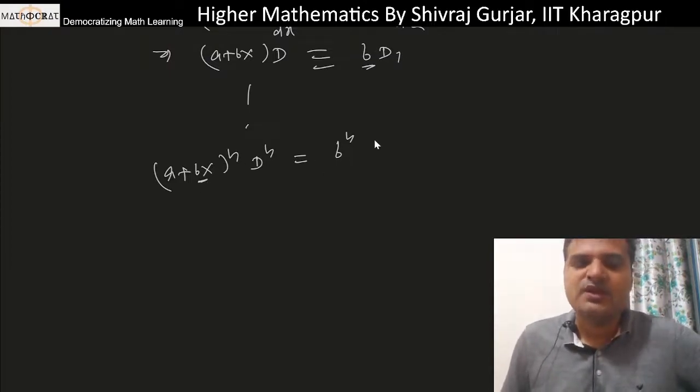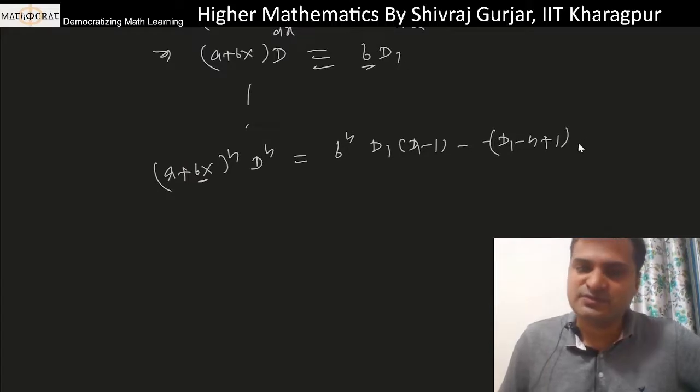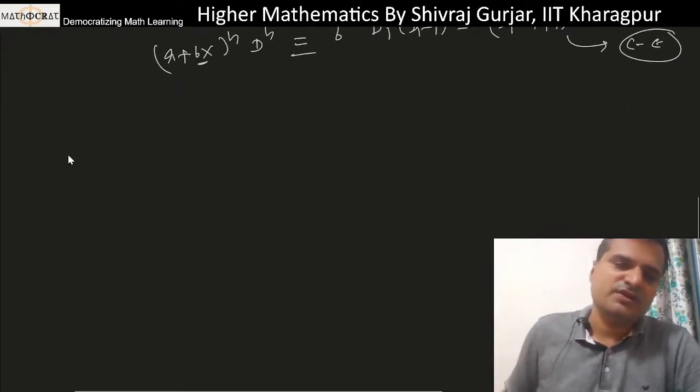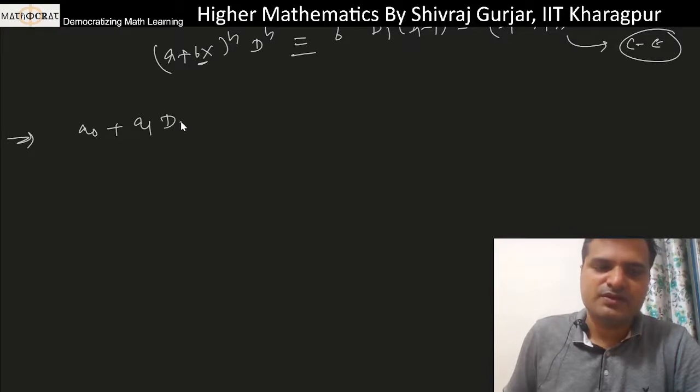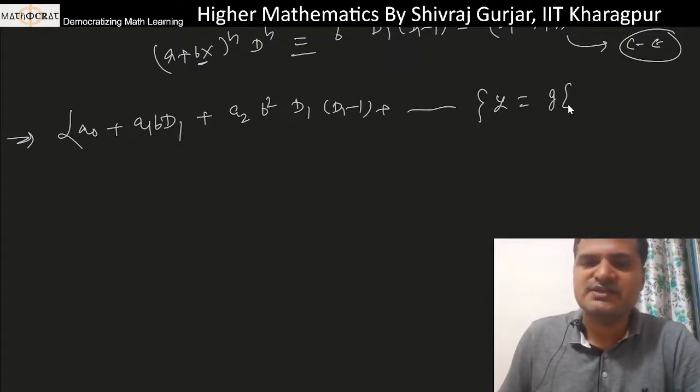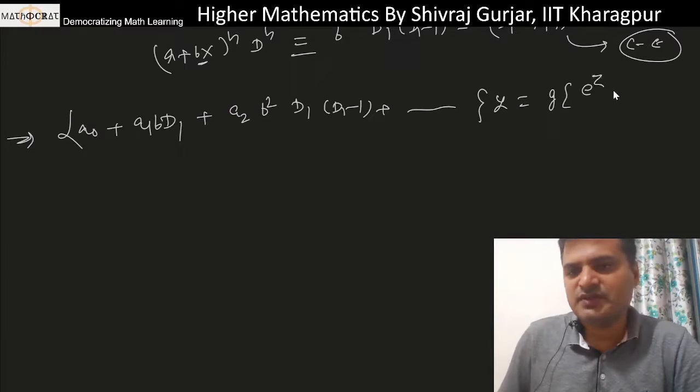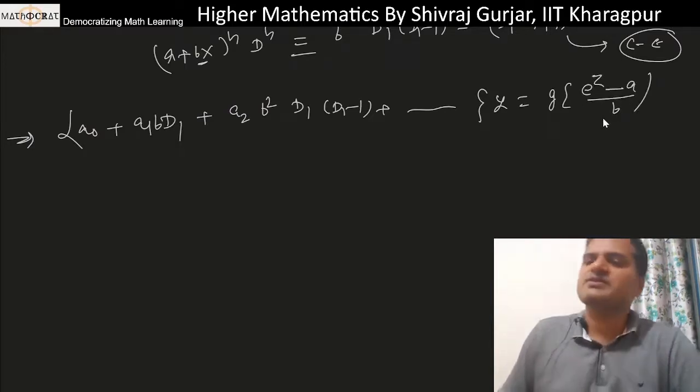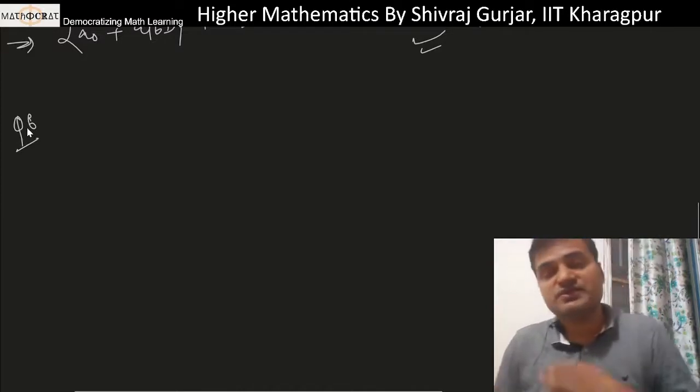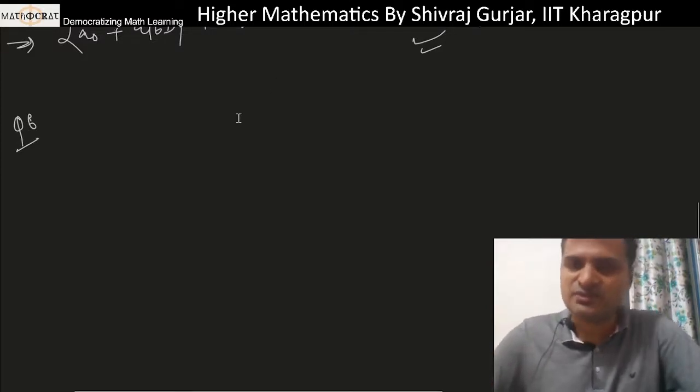So basically we can say (a+bx)D is equivalent to bD₁. Similarly, we can derive that (a+bx)ⁿDⁿ will be nothing but bⁿ times D₁(D₁-1)(D₁-2)...(D₁-n+1), where b is the coefficient of x. This is equivalent to Cauchy-Euler form. The equations that can be reduced to Cauchy-Euler equations are known as Legendre equations.